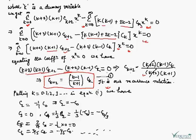In this recurrence relation, we substitute k = 0, 1, 2, 3, and so on. For k = 0: c₂ = (0-1)/(0+1) · c₀ = -1/1 · c₀, so c₂ = -c₀. For k = 1: c₃ = (1-1)/(1+1) · c₁ = 0/2 · c₁, so c₃ = 0.